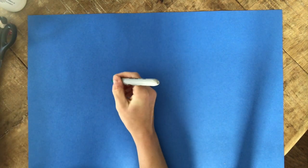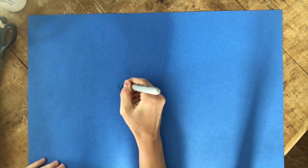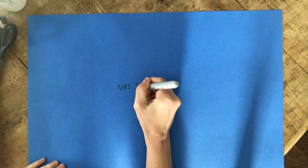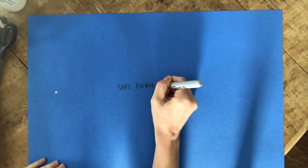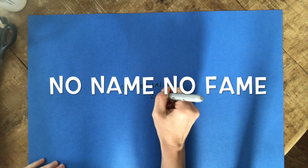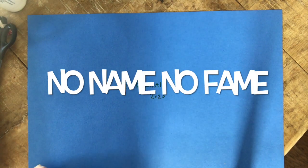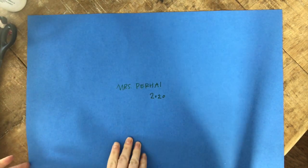First, take your marker and write your name on the back, and maybe the year. As I always say in class, no name, no fame. Next, take your paper and flip it like a pancake, and get ready to decorate on the other side.